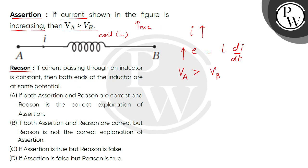is true. Now if we check the reason - if current passing through an inductor is constant, then both sides of the inductor are at same potential. So if current is constant in inductor, it means that